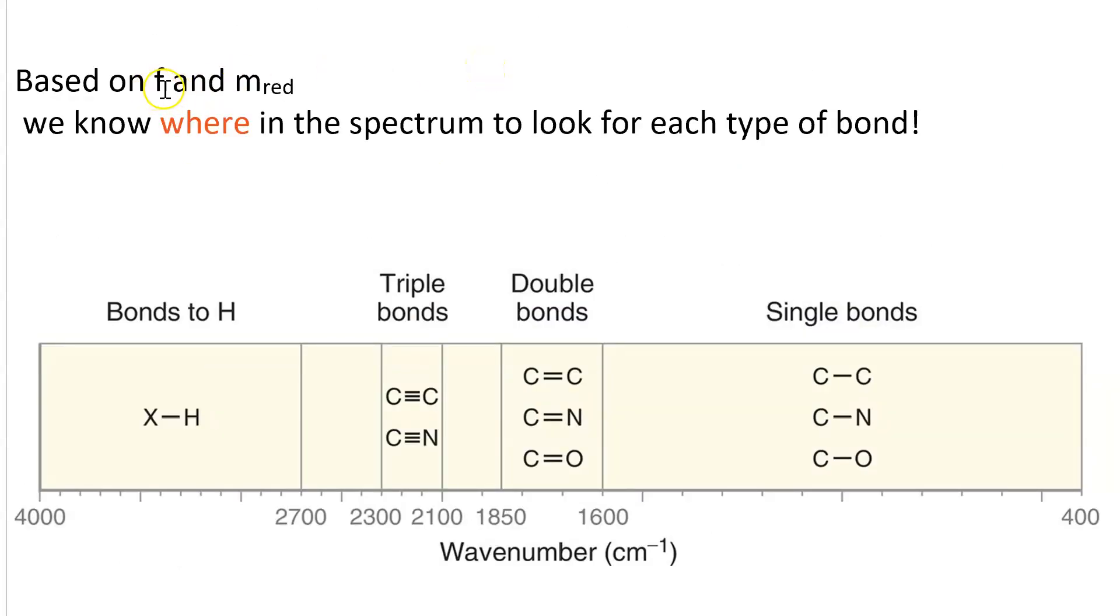Based on the effects of the force constant and the reduced mass, we know what wavenumber region in the spectrum is going to have each type of bond.